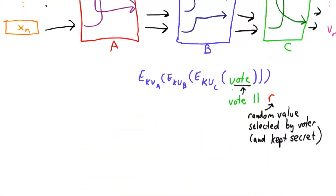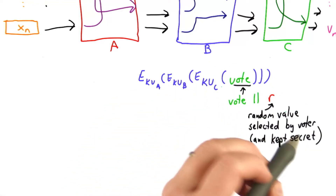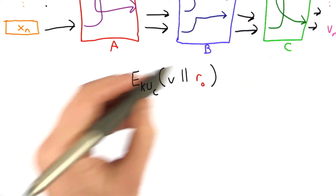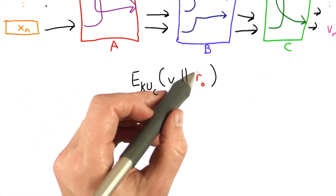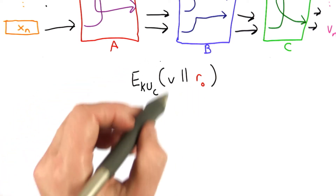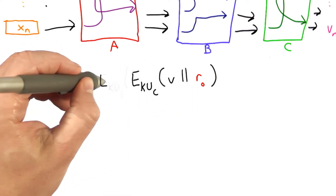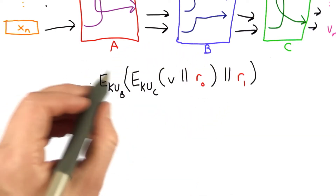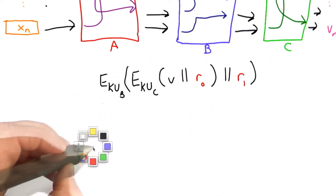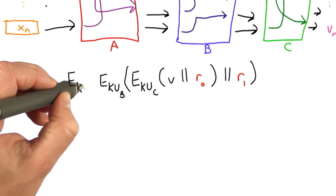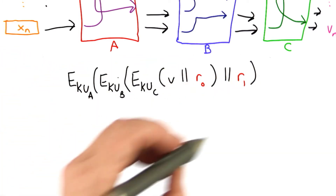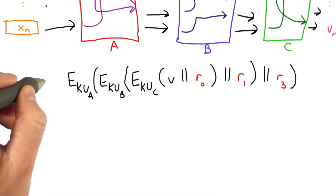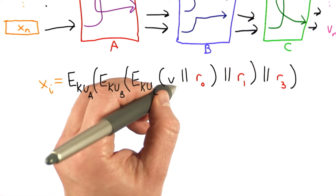So this isn't good enough, but we can carry that solution through and add random nonces to each of these layers. The inner message will be the vote concatenated with a random nonce, encrypted with C's public key. The next layer will be that message concatenated with a new nonce and encrypted with B's public key. And the outer layer will be this message concatenated with the third nonce, encrypted with A's public key. So this is the message the voter sends with that voter's vote.